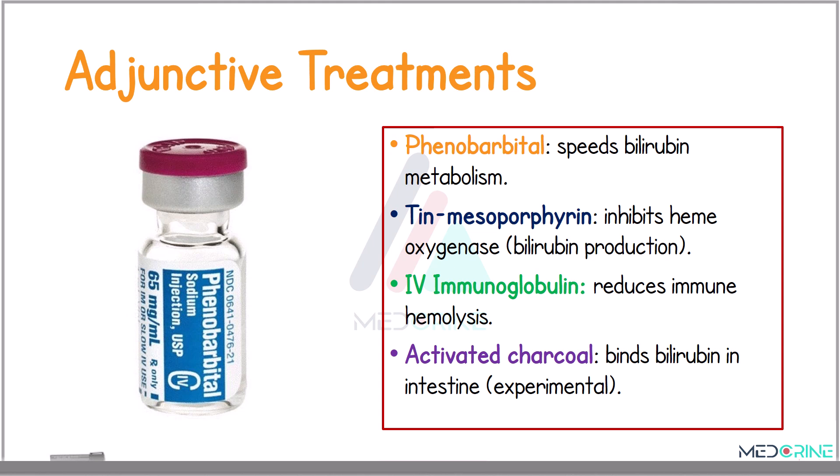There are some adjunctive treatments we can use in managing neonates with neonatal jaundice. For example, phenobarbital is known to speed bilirubin metabolism. Tin mesoporphyrin (SnMP) inhibits the heme oxygenase that is responsible for bilirubin production. We can also use intravenous immunoglobulins to reduce immune hemolysis, and sometimes activated charcoal to bind bilirubin in the intestine; however, this last mode is experimental.